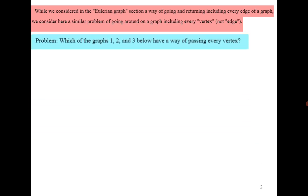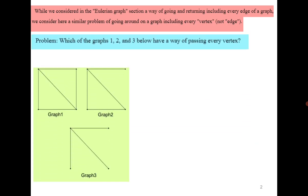Let us consider the example. If we see the first graph, you can say that we can start with any vertex and we can come back to the same vertex while covering all the vertices. In the second graph, if we start with the first one, then we cannot reach back to the same vertex while covering all the vertices and with no repetition of vertices. For the last one, none of the above two cases are possible.